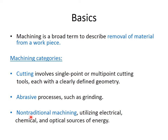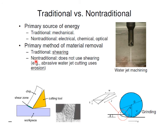Non-traditional machining means a different approach to cut the material. In conventional methods, we use cutting tools and the metal is cut by the action of friction. In non-traditional machining, different sources of energy can be used — such as electrical, chemical, optical, or maybe a focused beam. This is known as the non-traditional approach for machining. Let us have a brief comparison of traditional and non-traditional machining.